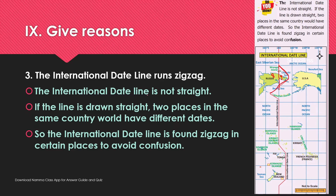The International Dateline is not straight. If the line were drawn straight, two places in the same country would have different dates. Therefore, the International Dateline is drawn zigzag in certain places to avoid confusion.